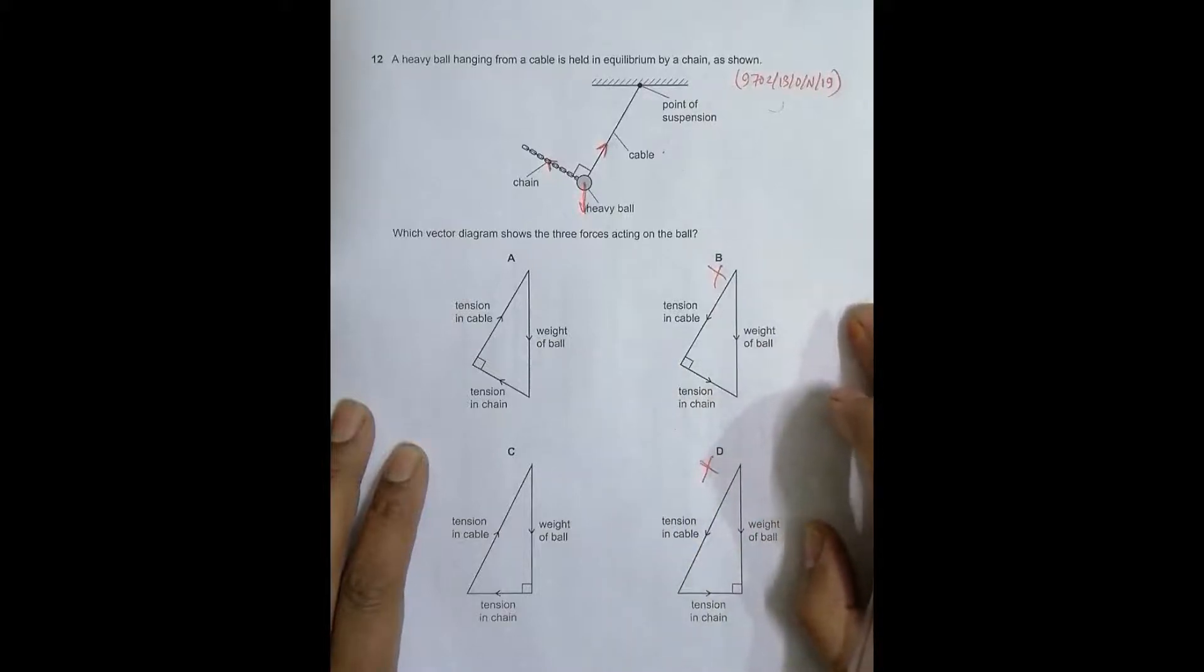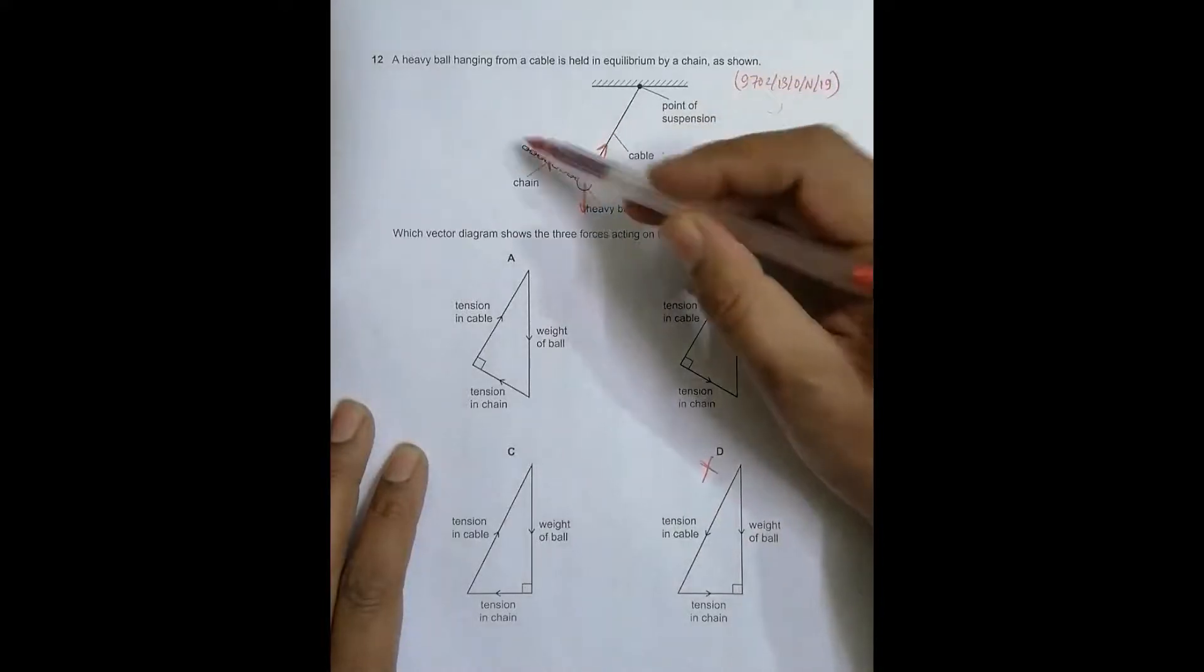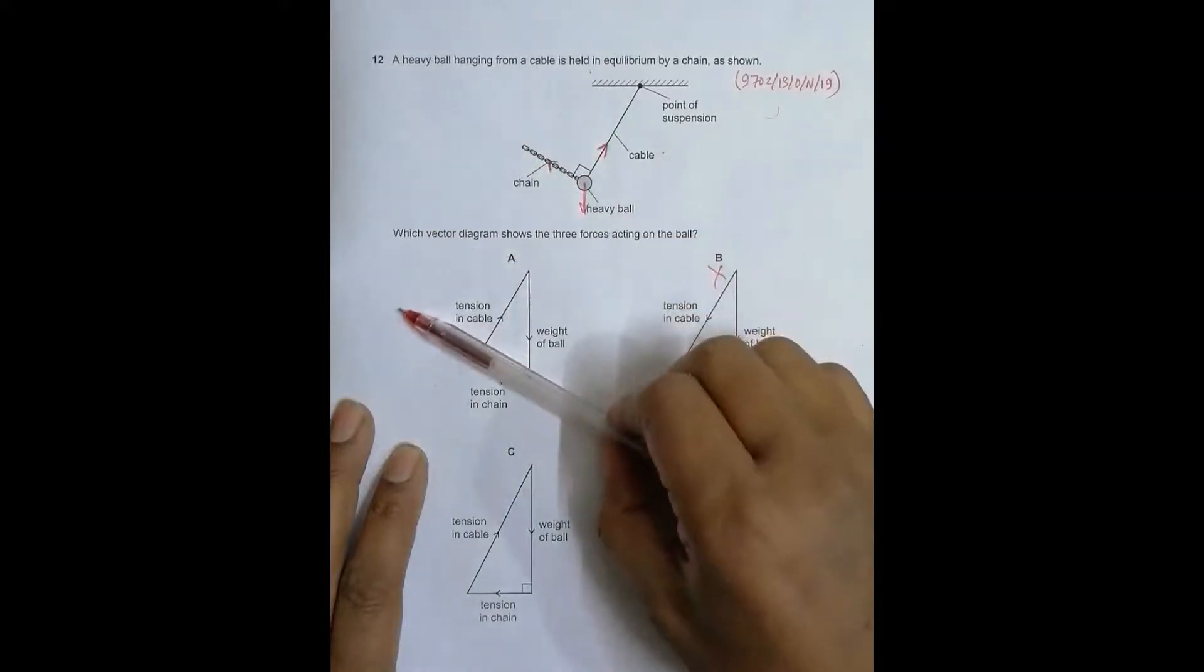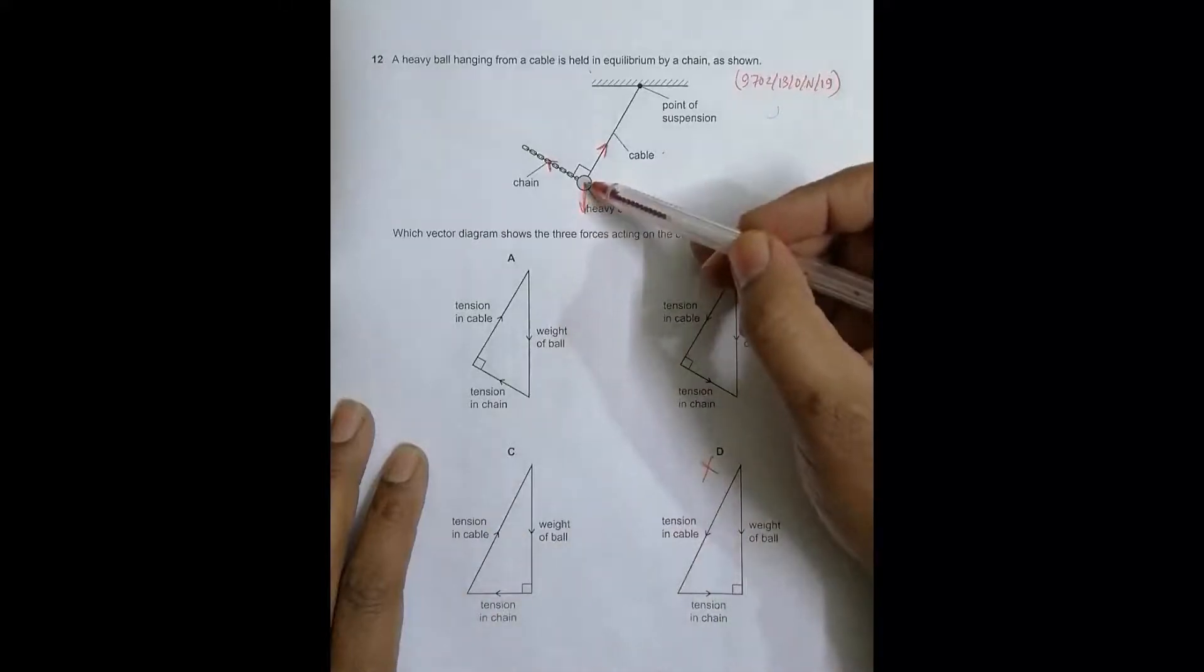Next we have tension in the chain in this direction. If we go through here, this qualifies in this direction, but here it's in this direction, so this is definitely not correct.